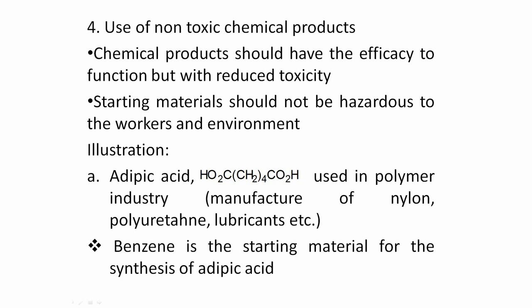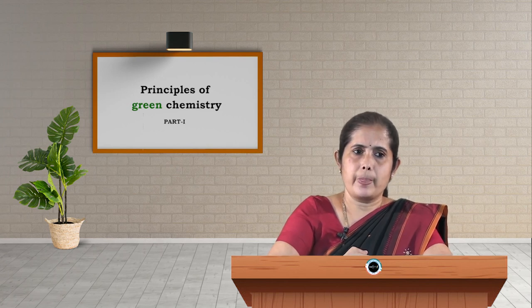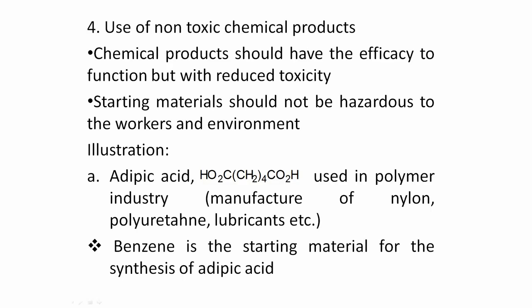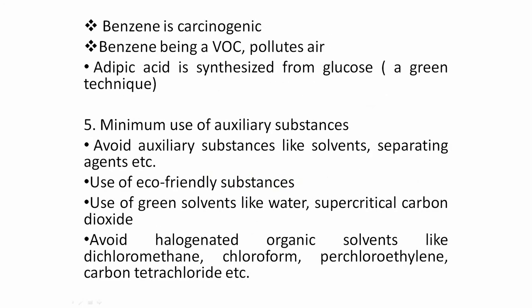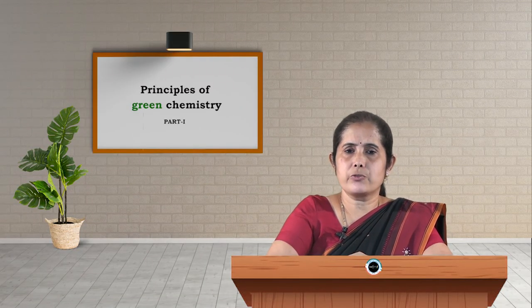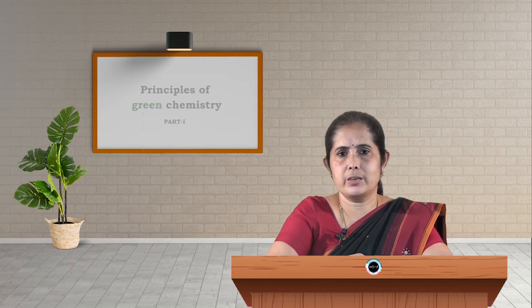Let us see one example for this principle: adipic acid. Adipic acid is used in the polymer industry, for example in the manufacture of nylon, polyurethane, and lubricants. Adipic acid is traditionally synthesized from benzene, which is a carcinogenic and volatile organic compound that pollutes the air. Using benzene as the starting material is not eco-friendly. Instead, we can synthesize adipic acid from glucose, which is a green technique. We will see many more examples for this principle in future classes. The next principle is minimum use of auxiliary substances, which we will discuss in our next class.